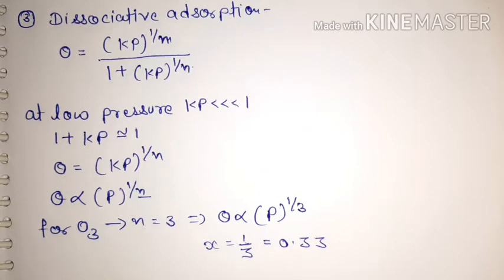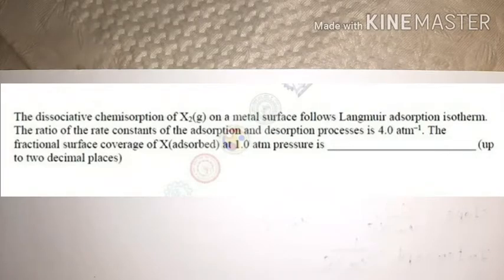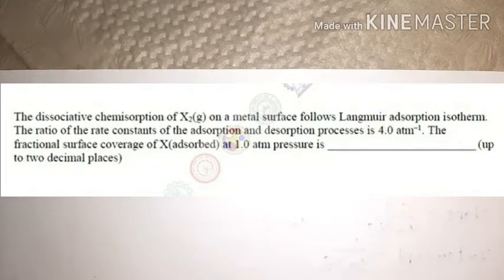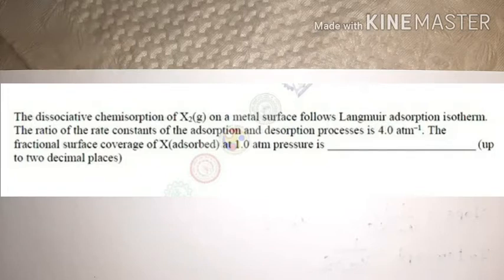The answer to this GATE 2018 question is x = 0.33. The next question was asked in GATE 2017: the dissociative chemisorption of X₂ gas on a metal surface follows Langmuir adsorption isotherm. The ratio of rate constants of adsorption and desorption is 4 per atm. Find the fractional surface coverage of X adsorbed at 1 atm, to two decimal places.